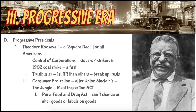Roosevelt also introduces something called the Consumer Protection Bureau after reading Upton Sinclair's 'The Jungle,' which we'll talk about more in class. Once he reads it, it's so repulsive to him that he creates what's known as the Meat Inspection Act and the Pure Food and Drug Act, which basically says that business owners can't change or alter food or alter labels in any misleading way — they have to be upfront and truthful about what's in their product.